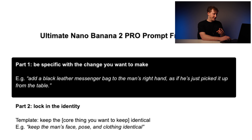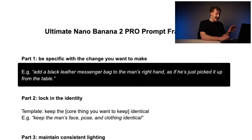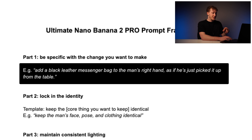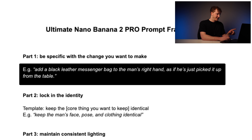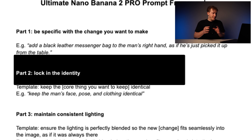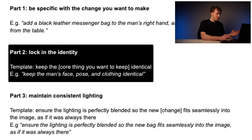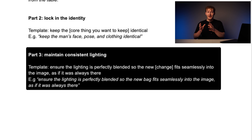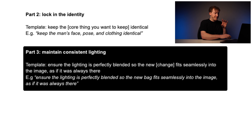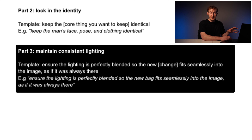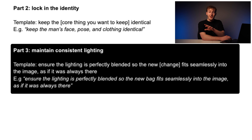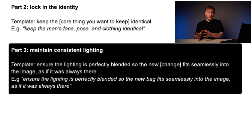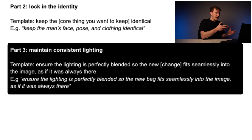Here's my three-step prompt structure that gets perfect results every time. Step one: define the change you want to make and be specific — instead of 'man holds a bag,' say 'add a black leather messenger bag to the man's right hand as if he's just picked it up from the table.' Step two: add 'keep the core thing you want to keep identical' — for example, 'keep the man's face, pose, and clothing identical.' Step three: add 'ensure the lighting is perfectly blended so the new change fits seamlessly into the image as if it was always there.' This tells Nano Banana to match the lighting, shadows, and color so your edit looks 100% real.